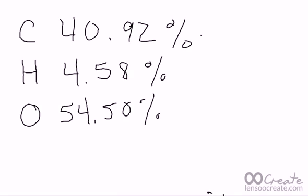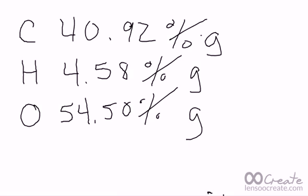So the first step is simply to drop the percents, assuming that we have 100 grams of this sample, and we'll just say that's how many grams of each of these we have. So I'm saying I have 40.92 grams of carbon, 4.58 grams of hydrogen, and 54.50 grams of oxygen.